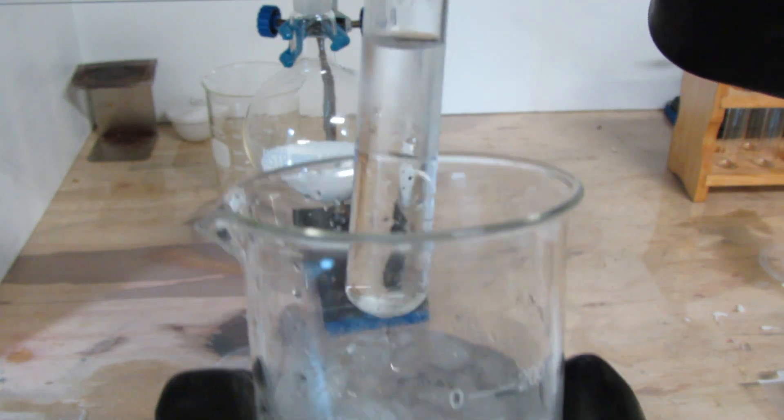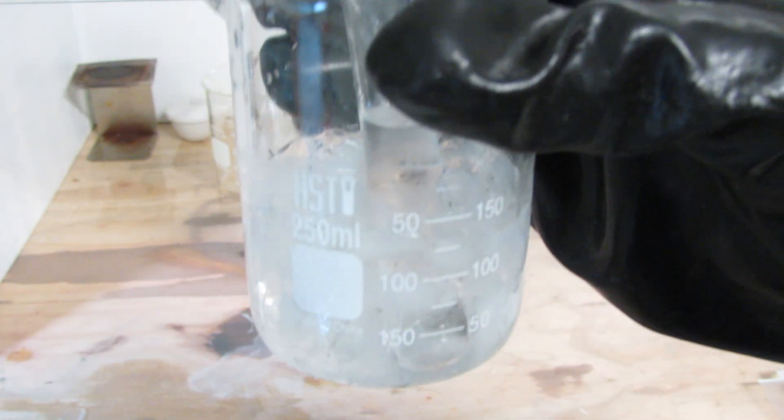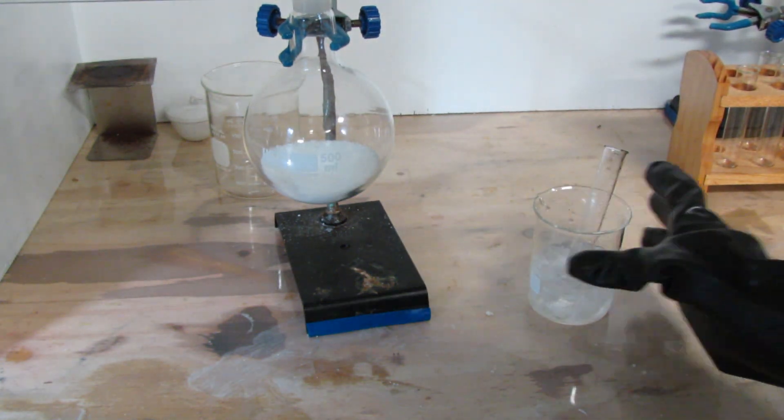Now get a test tube and fill it up with a small amount of water, and place the water in an ice bath. I am just using a beaker with some crushed ice and water. This will help the hydrogen chloride dissolve.